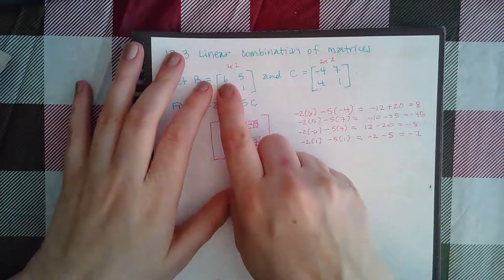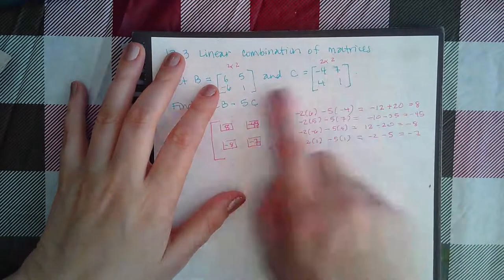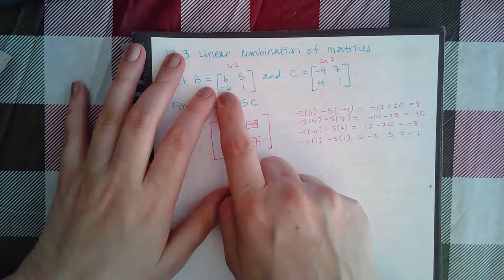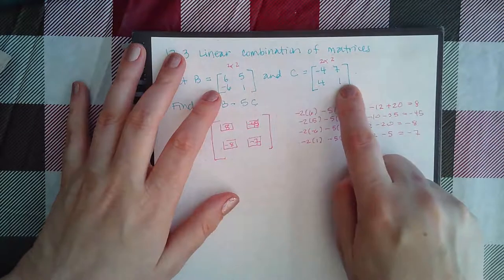So first row, first column with first row, first column. First row, second column with first row, second column. Second row, first column with second row, first column. And second row, second column with second row, second column.